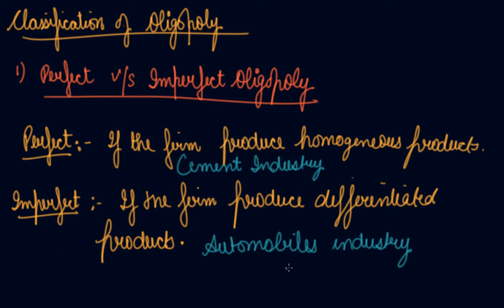Imperfect oligopoly you have in the automobiles industry. Maruti, Ford, Fiat — they are selling the product that is your car, your automobile. But they are selling differentiated products. Maruti's design is different, Ford's figure is different. So this is the classification of perfect versus imperfect oligopoly.